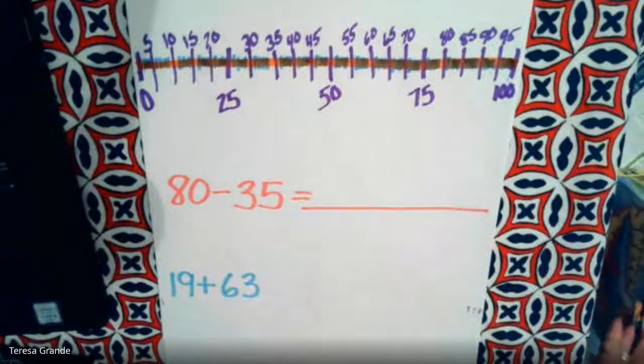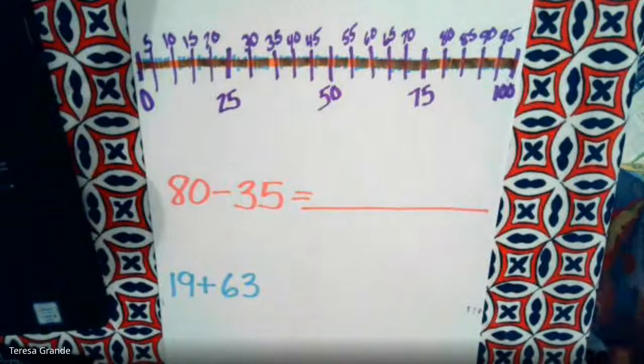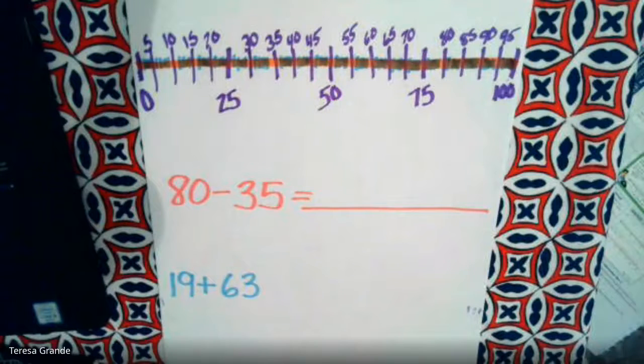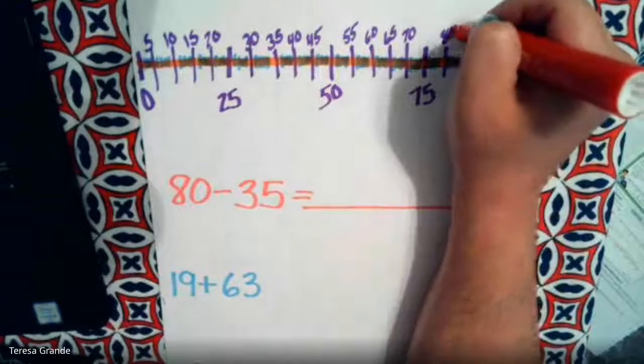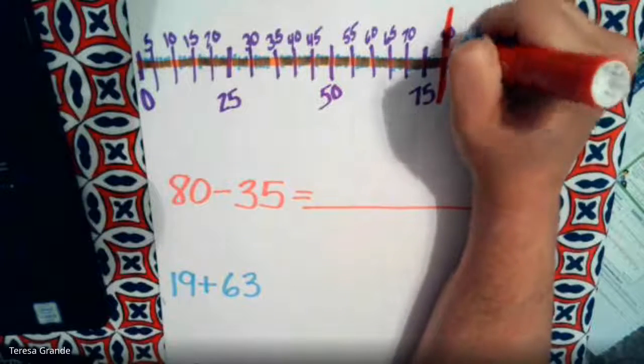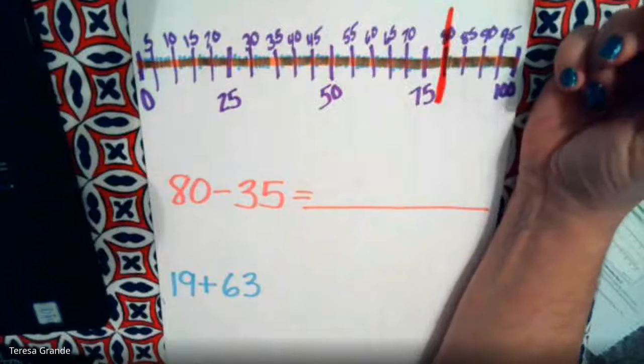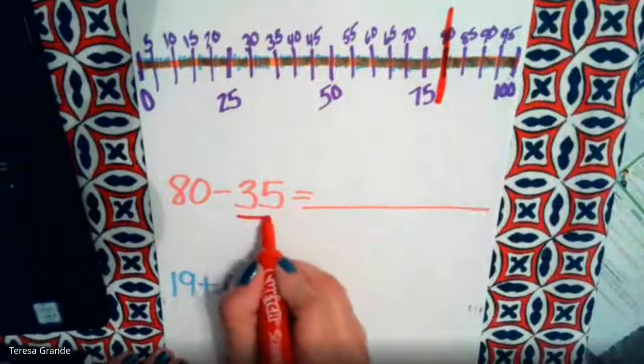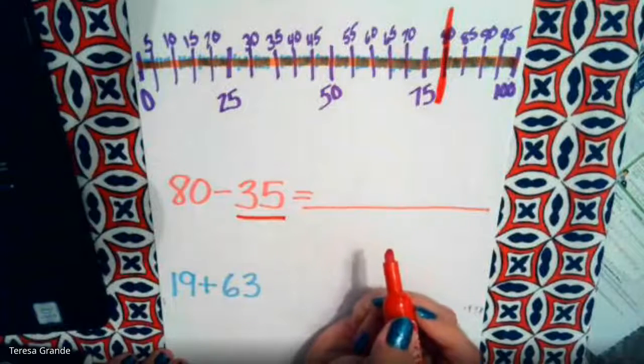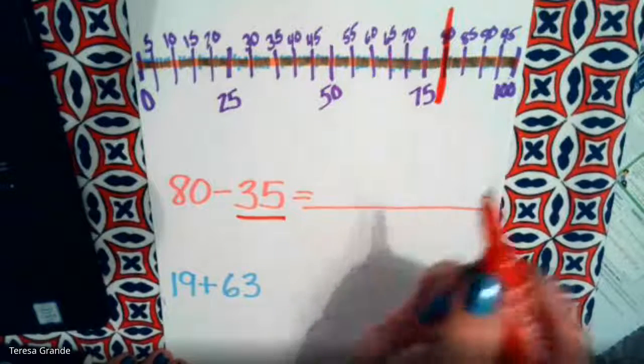So 80 minus 35. I was going to do it in pink, but I'm going to do it in red so it's a bit darker. So we're going to start at the number 80, which is right here. We need to subtract 35. Since the number is 35, second grade, we can count backwards by five.